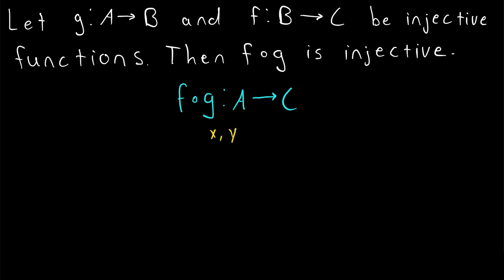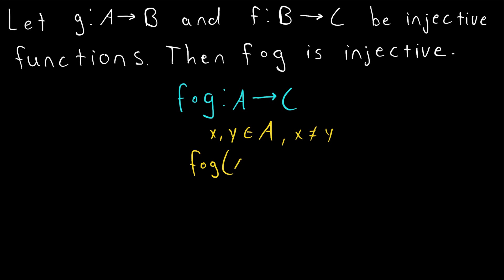Meaning if we take two distinct elements X and Y from the domain, where X is not equal to Y, then their images under this function are also distinct. That's what it means for this function to be injective. So F of G of X is not equal to F of G of Y — if we put distinct elements into the function, their images that come out will also be distinct.